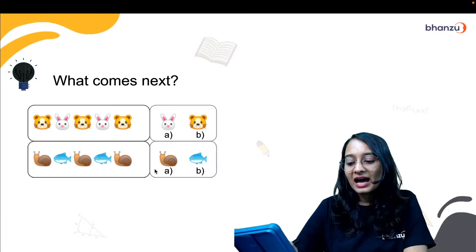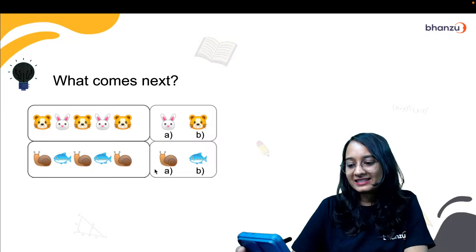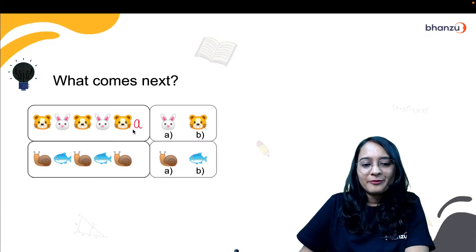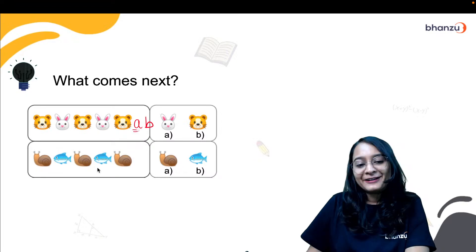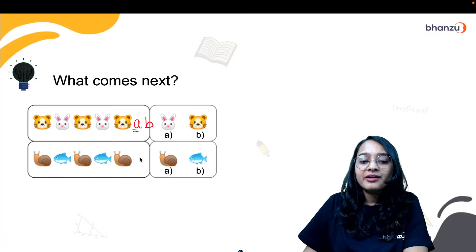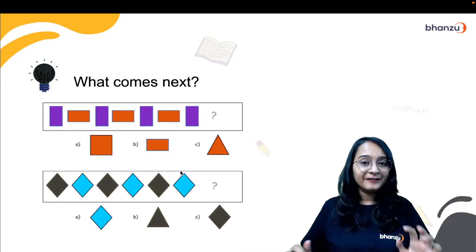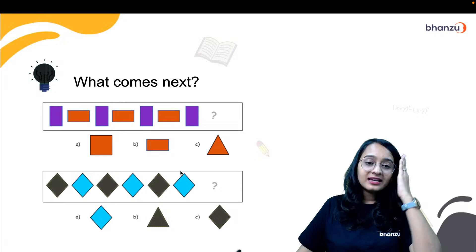Now what comes next? Can somebody quickly tell me in the chat box what is coming next in the series? Hurry up, hurry up. All right, very easy. We are like, ma'am, what is this? We've already done. So first this A will come and then B will come. What about this? Snail and a fish, snail and a fish, snail and a fish. So first B will come and then your snail will come.